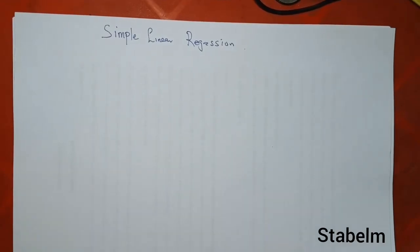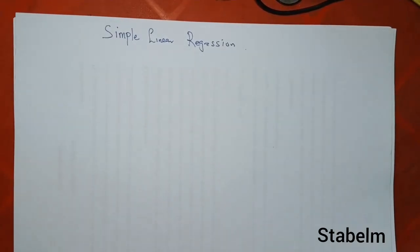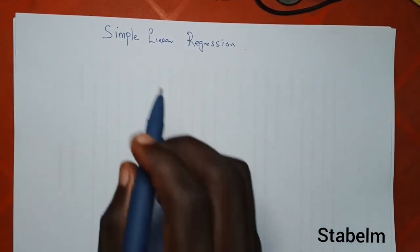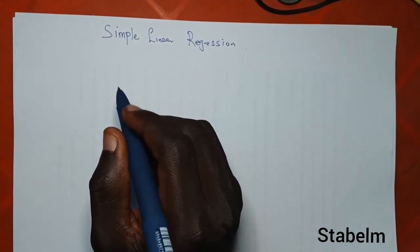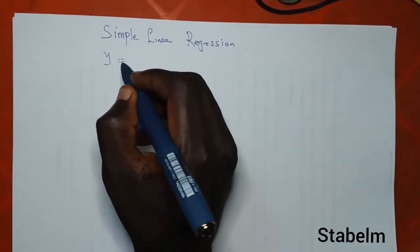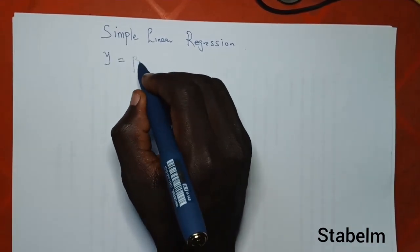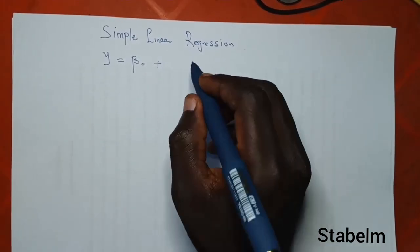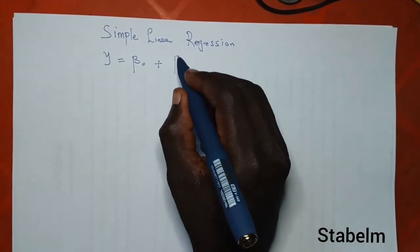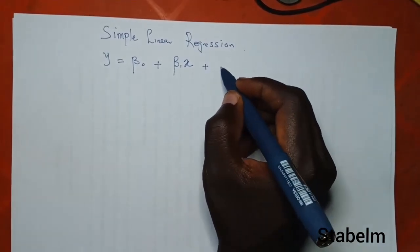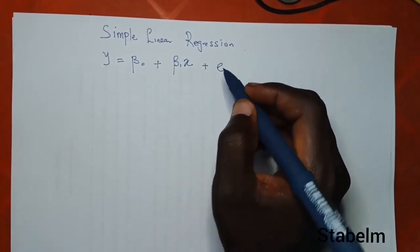Okay, very quick one. Let's look at a simple linear regression. The linear regression model is given as y equals beta naught plus beta 1 x plus error term.